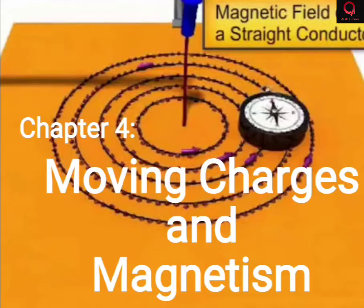This is a very important chapter in physics because it marks the beginning of the branch called electromagnetism. Until the beginning of the 19th century, scientists knew about electricity and magnetism separately, but it was in the early 19th century that the interrelation between electricity and magnetism was discovered.